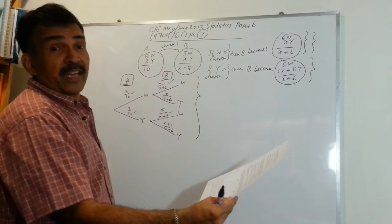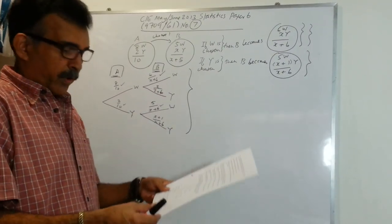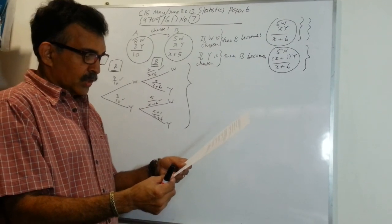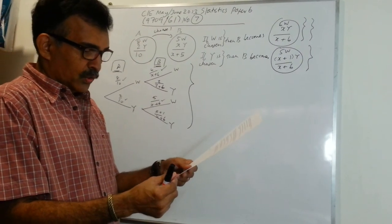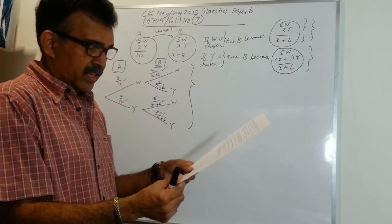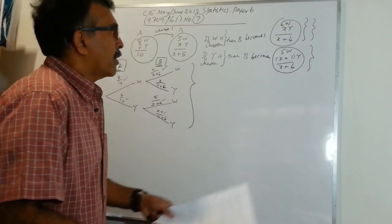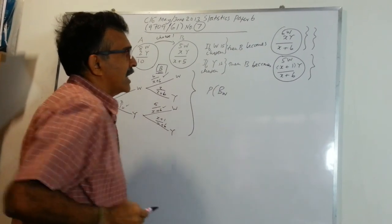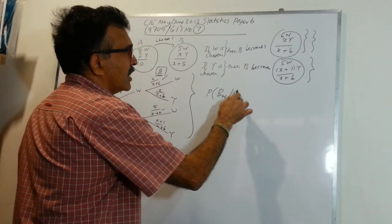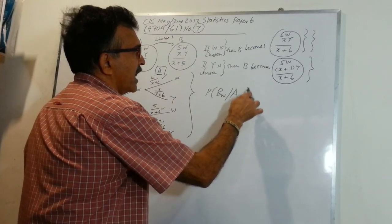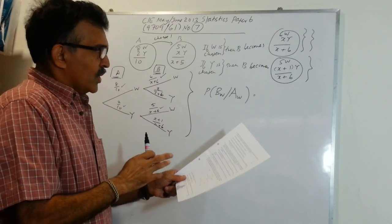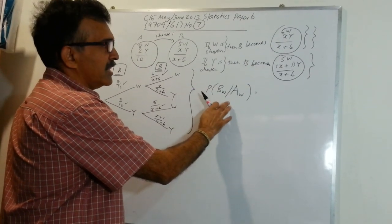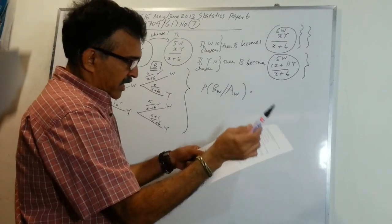We have covered the first part and the second part without any problem. Now let's read part three of the problem: if the ball chosen from box A is white, then the probability that the ball chosen from box B is also white is one over three. You are asked to show that the value of x is 12. So, the probability of choosing a white from box B, given that you have chosen a white from box A, equals one over three.